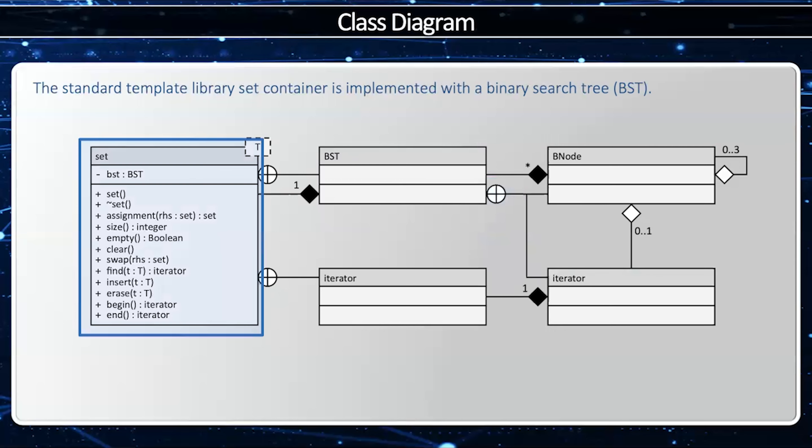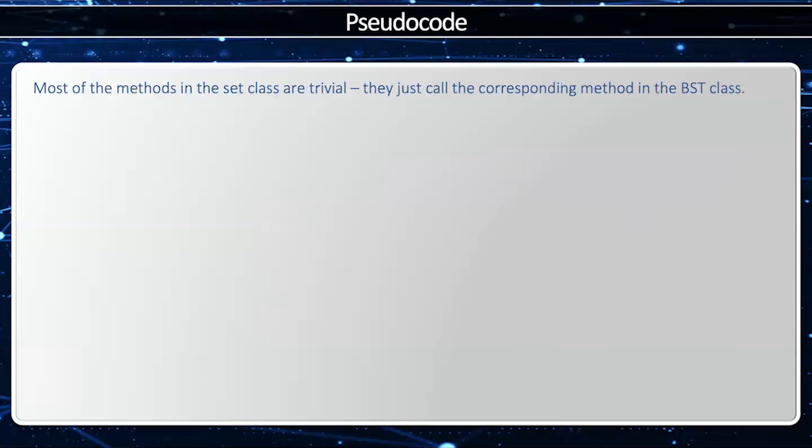Then we have the set. The set is going to have a single BST, and it's going to have all the common set interfaces the client would expect. It's going to have a single BST through composition. In other words, if I create a set, then I will create a BST. If I destroy the set, the BST will be destroyed as well. And the BST will be a nested class within the set. In other words, the client should have no clue the BST is the underlying data structure. They don't have access to the BST, and therefore the private nested class. The set also has an iterator, and this iterator is going to be a nested class within the set. And this one's a public nested class, and we hope and expect the client to use set::iterator. Most of the methods within the set are actually trivial because they're just calling BST methods.